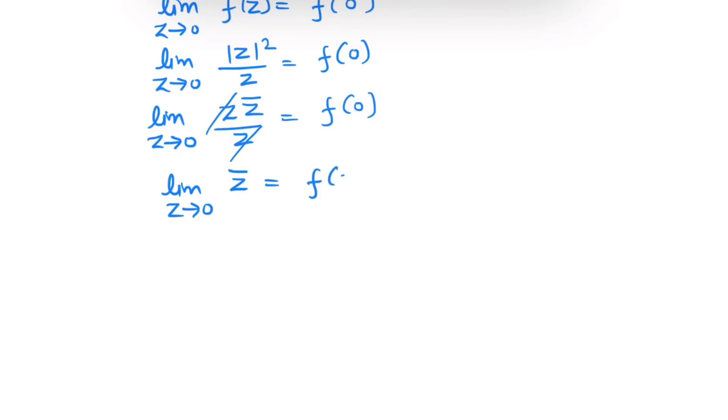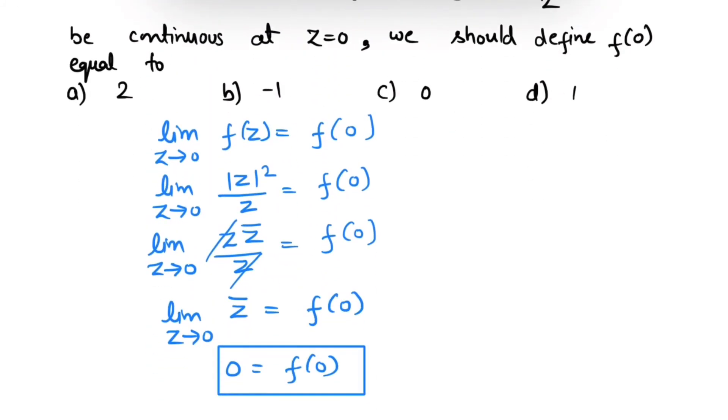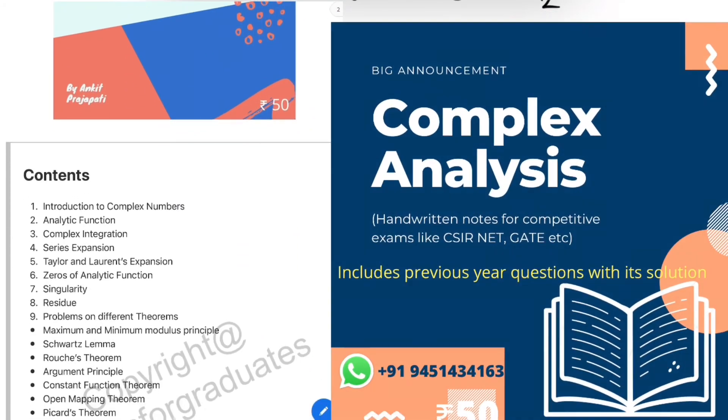And the limit will be 0, and this equals to f(0). So this is the required value of f(0), hence option c is correct.